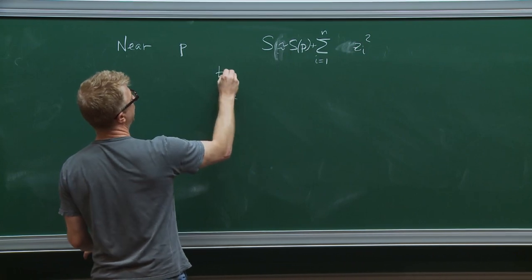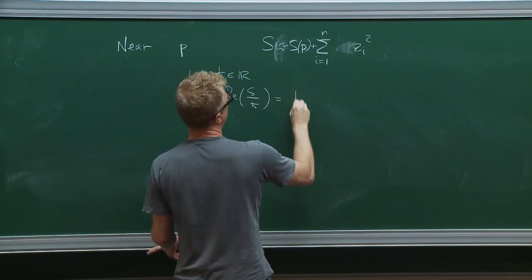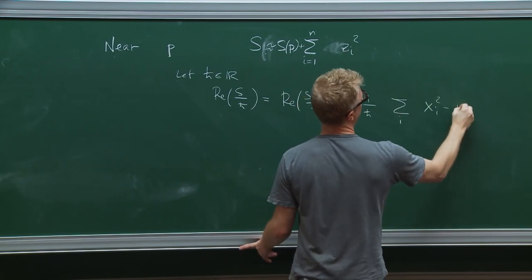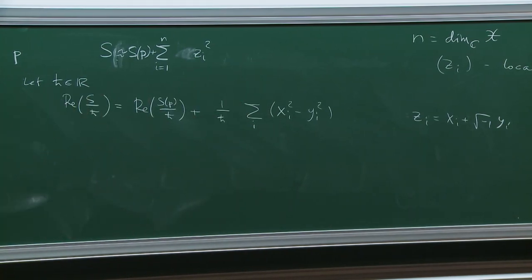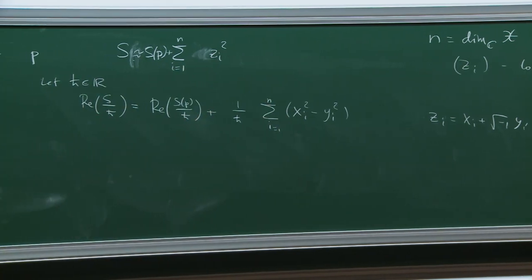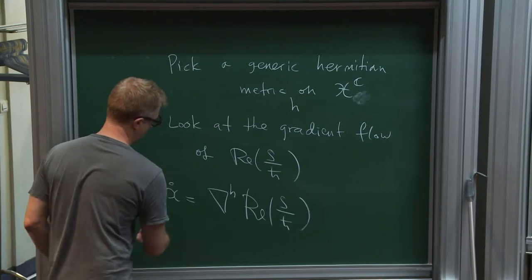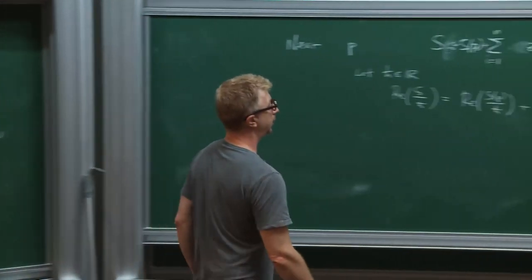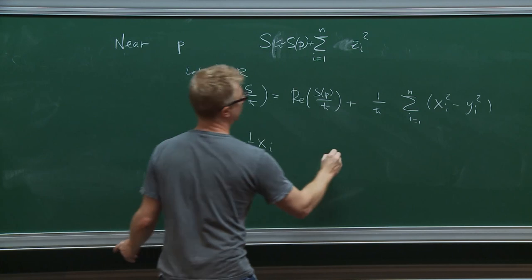With H real, the real part of S over H-bar is the real part of S(p) over H-bar, plus one over H-bar times the quadratic terms. This function has half positive squares and half negative squares in the expansion near the critical point. Looking at the gradient flow equation with a flat metric, for half of the variables this point is repulsive — the gradient flow repels you from this point — and for the other half, the variables are attracted.